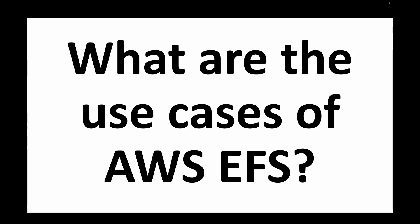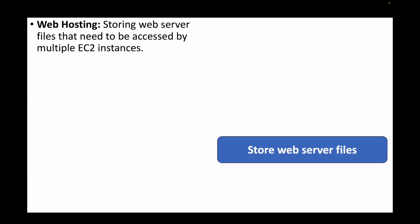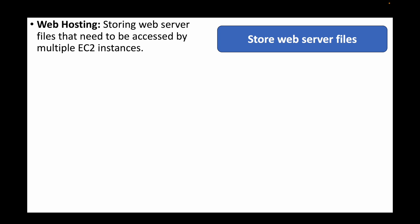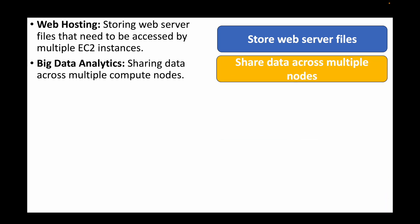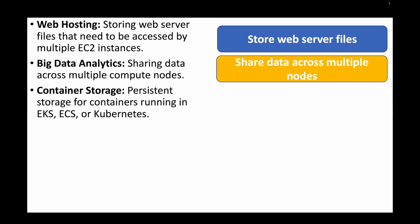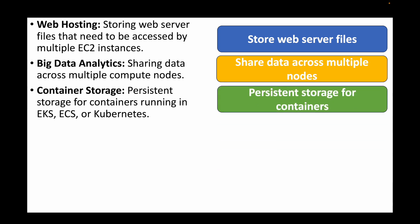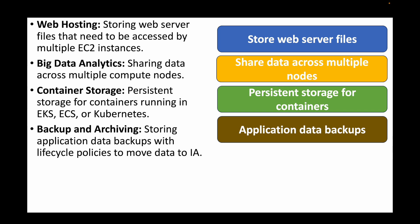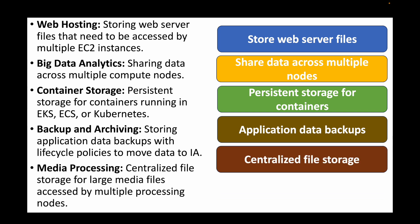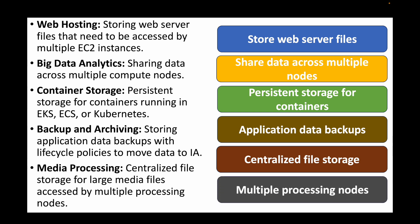The next question is: what are the use cases of AWS EFS? You can use it for web hosting to store web server files accessible by multiple EC2 instances. It's useful for big data analytics to share data across multiple compute nodes. It supports container storage for persistent storage in ECS, EKS, or Kubernetes. It can also be used for backup and archiving with lifecycle policies, and for media processing with centralized file storage for large media files accessed by multiple processing nodes.